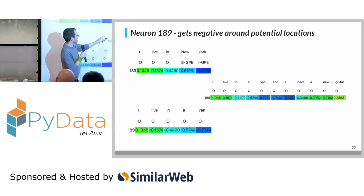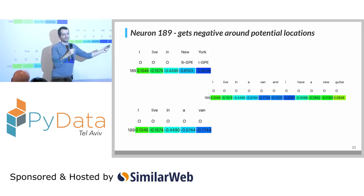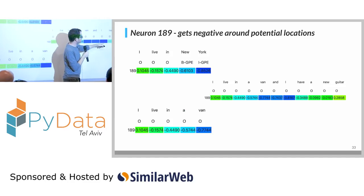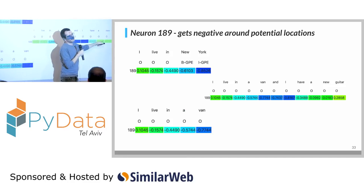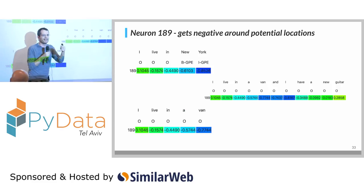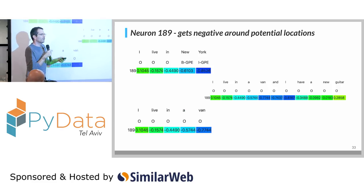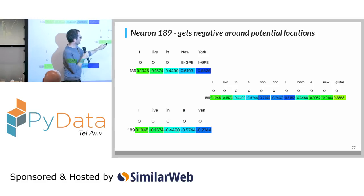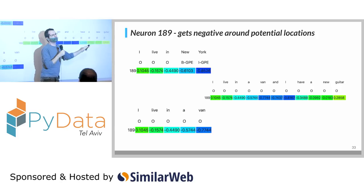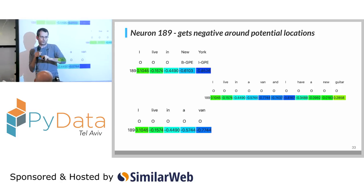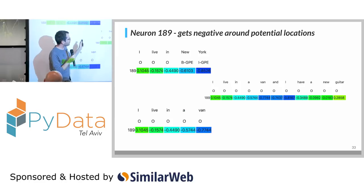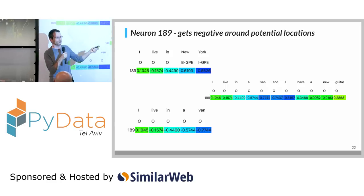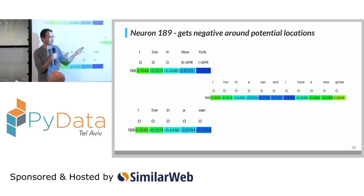The last thing to show: in 'I live in a van and I have a new guitar,' you can see the neuron goes negative but at some point starts to forget and goes back toward zero. That's a property of LSTM — information is stored for some time, and then when it doesn't help anymore, after four or five words, we just don't need this information and we start to forget it and not be distracted by it.